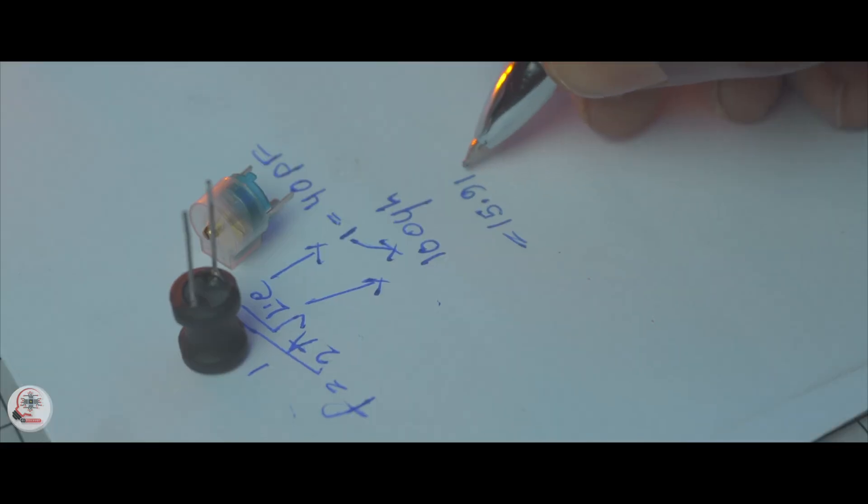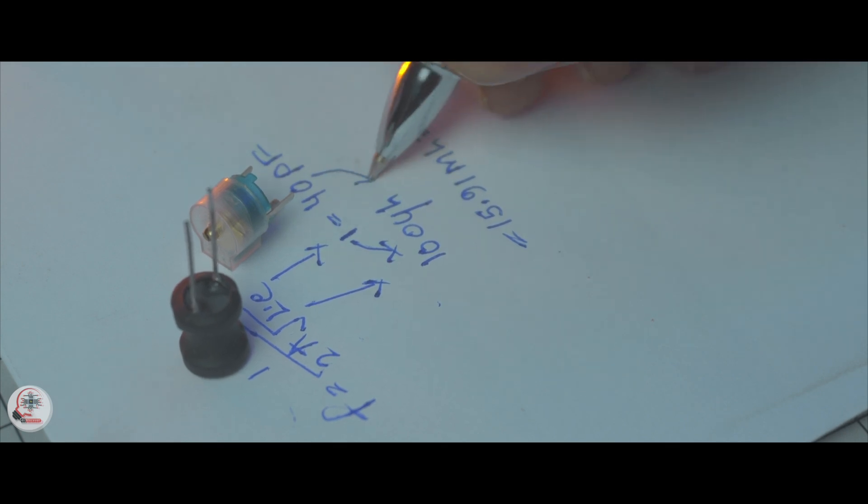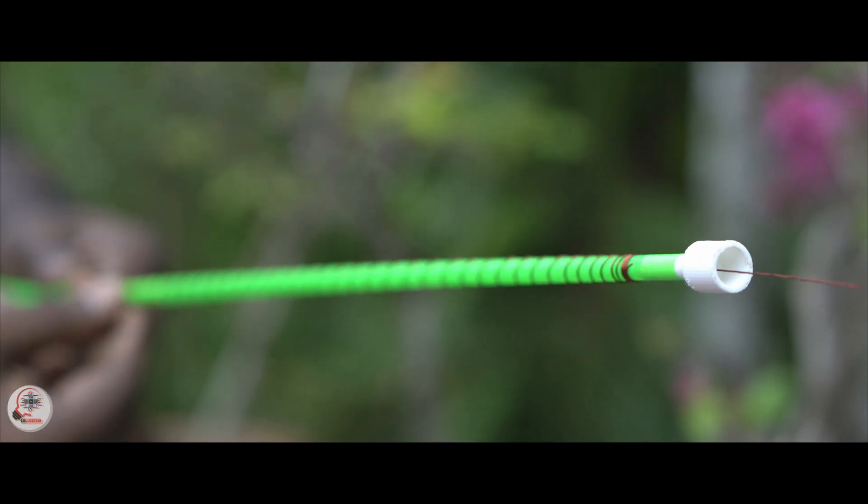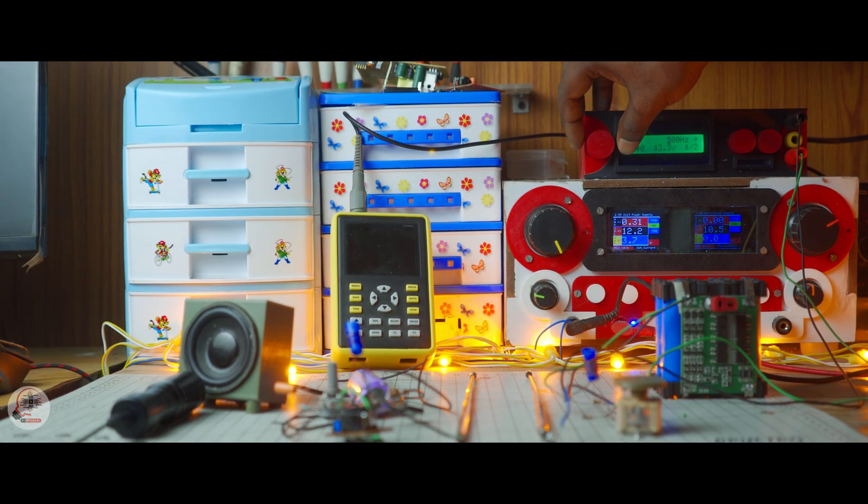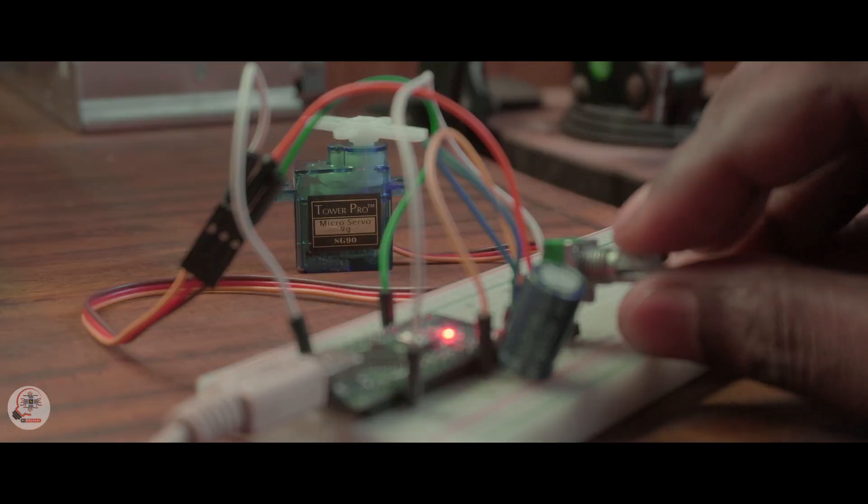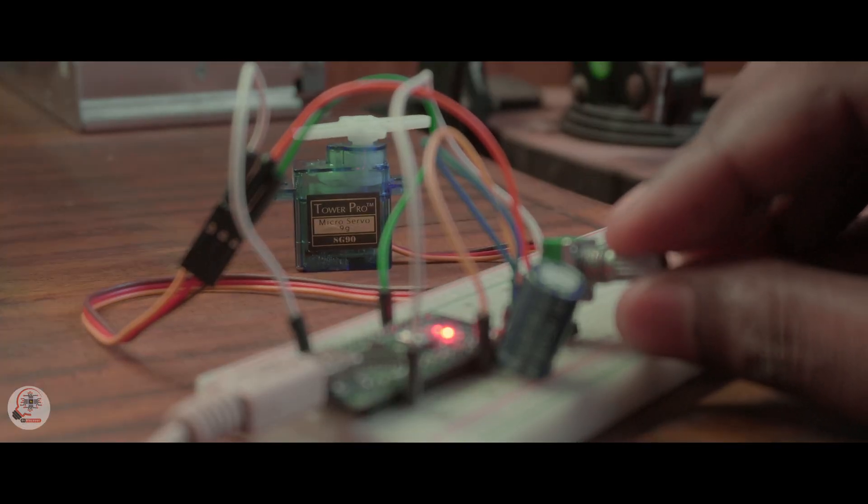So now the main question is how to make this transmitter and receiver. Okay in my previous video I mentioned how to calculate an LC circuit, make a paper coil, how to tune the correct frequency, how to make a perfect antenna, and even how to communicate with each other. But that was only radio communication guys.